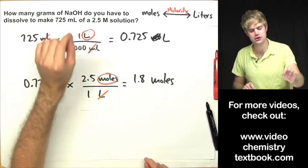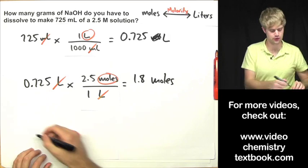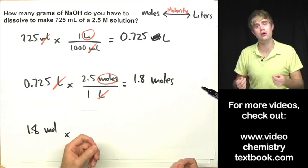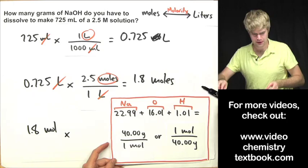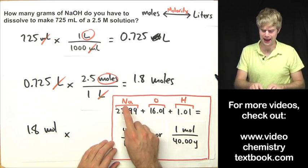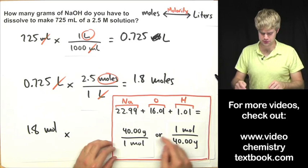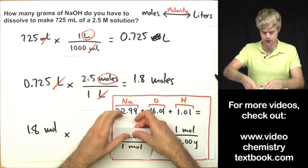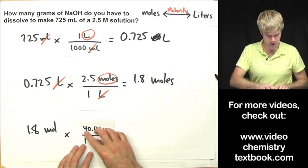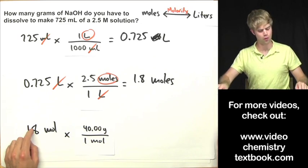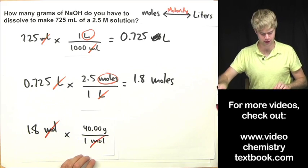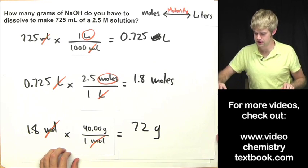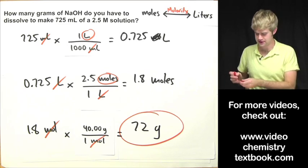Now we know how much NaOH in moles, but since the question asks for grams, we multiply by a conversion factor involving the molar mass. Sodium hydroxide has sodium, oxygen, and hydrogen — adding their atomic weights gives 40 grams per mole. We use 40 grams per mole: 1.8 moles times 40 grams per mole equals 72 grams, and that's our final mass.